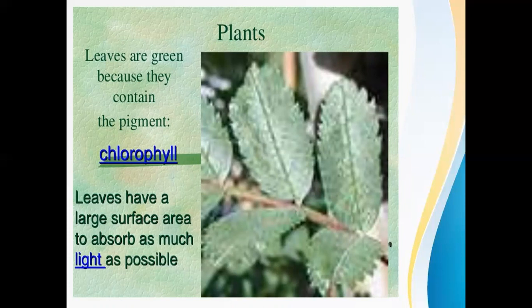Chlorophyll is the green-colored substance present in the plant's leaf. It is the chlorophyll which traps the energy from sunlight and turns carbon dioxide and water into sugar and other carbohydrates, which are the plant's food. Leaves have a large surface area to absorb as much light as possible — they are wide and flat so they can easily prepare food for the plant.